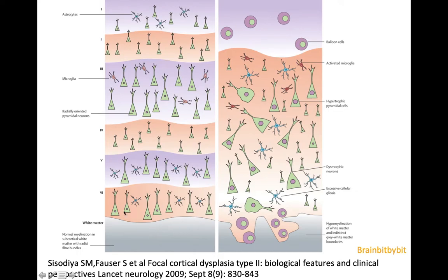When the cortex develops, layer 1 is formed first, and then the layers are formed from an inside-out manner, so layer 6 before layer 2. I thought this was remarkable, because then these neurons have to pass the already migrated neurons. But when I realized that layers 4, 5, and 6 have the connections with the brainstem and thalamus, and layers 2 and 3 have the cortical connections, it made more sense.